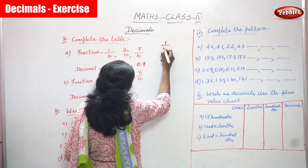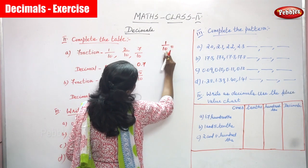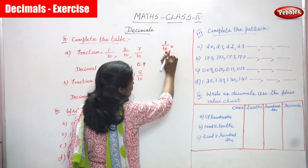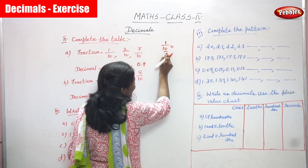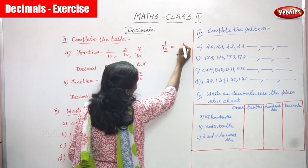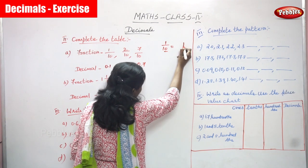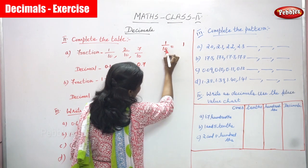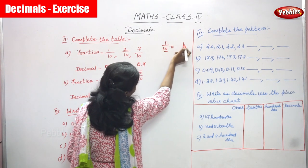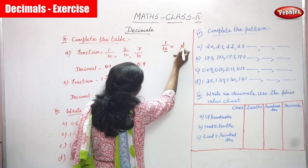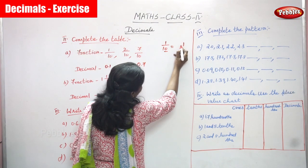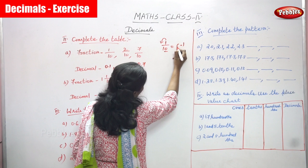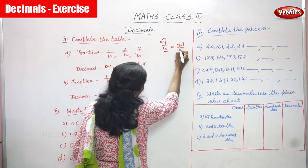I have already told you how. For 1 by 10, 1 is the numerator and 10 is the denominator. In that denominator, how many zeros? Only one zero. So you have to move one place. You have to write the numerator as it is, and because the denominator has only one zero, you move one place to the left side. So you write 1, then put a point, then write 0. So 0.1 is the answer.